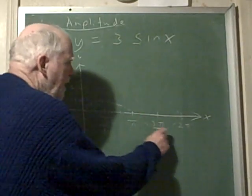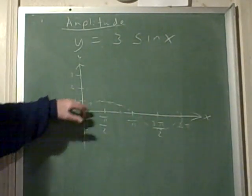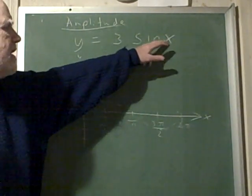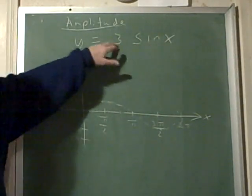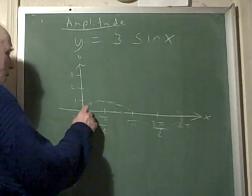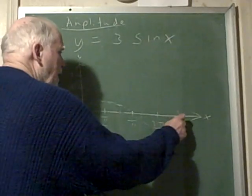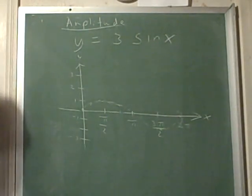And when we do that, all the zeros remain zero because if you put in, say, zero, you'll get sine of zero is zero, three times zero is zero.